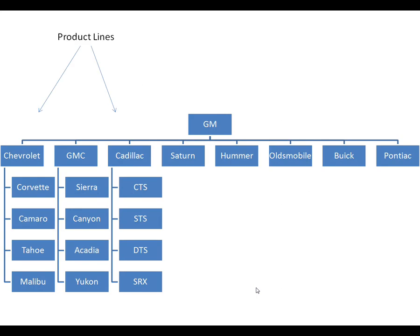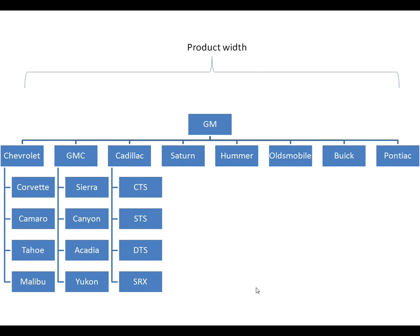Here's an example using General Motors. This is an old brand chart for GM. They create all these different brands and sub-brands: Chevrolet, GMC, Cadillac, Hummer, Buick — those are examples of product lines. The number of lines you carry is product width. If you have eight product lines, you have wider product width than a company with only four. Product depth is how many different products you sell in each product line — Cadillac has the CTS, STS, DTS, and SRX. Hummer has the H1, H2, H3, so it's not nearly as deep as Cadillac.